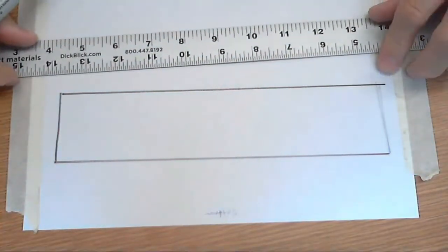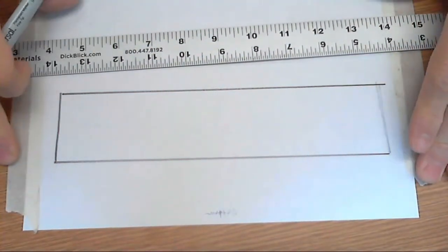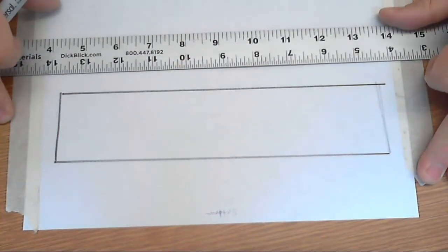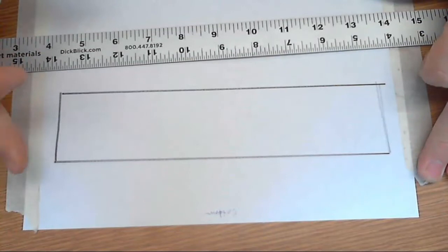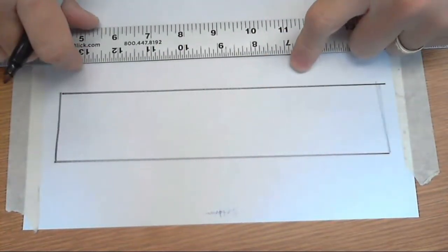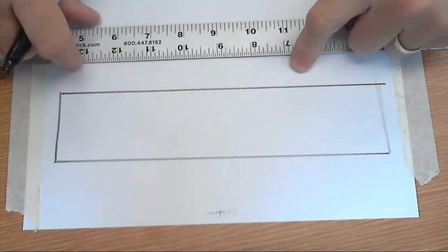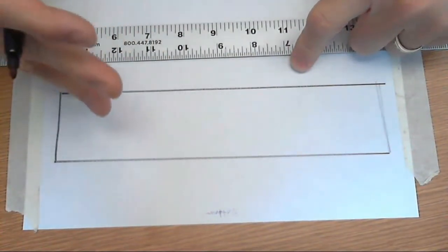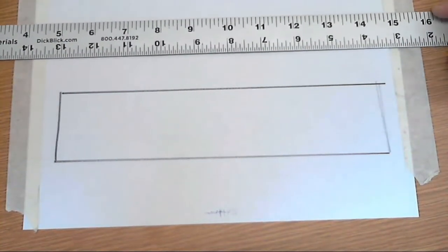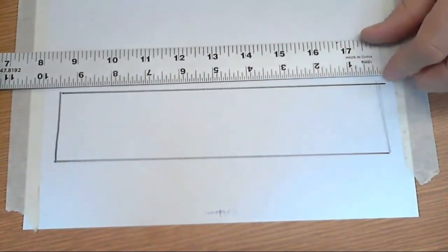Okay, so now one of the first skills we're gonna learn in this class is how to shade. Shading helps us take a two-dimensional shape, like this rectangle, and it creates a form using different values. Now, to get a good range of values...